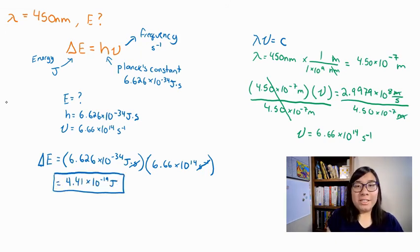We find that the energy is 4.41 times 10 to the negative 19th power joules. And that's it. Let me know if you have any questions.